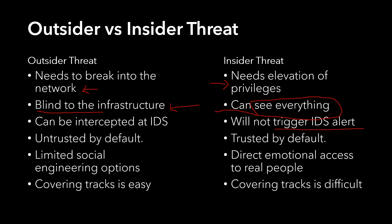The outsider threat is untrusted by default — all systems are programmed so that sharing settings and network settings block external connections by default, and attackers have to find a way to circumvent this. However, the insider threat is already an employee, consultant, or part of the company in some way, so they are trusted by default. That is a great advantage because no one is going to suspect them in case of a real attack or even a possibility of an attack.